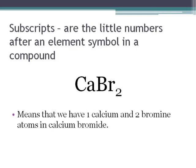Subscripts are the little numbers after an element symbol in a compound. This little two means that we have two bromines, but because there's no little number after calcium, it means we just have one.